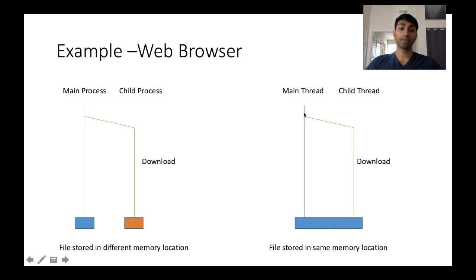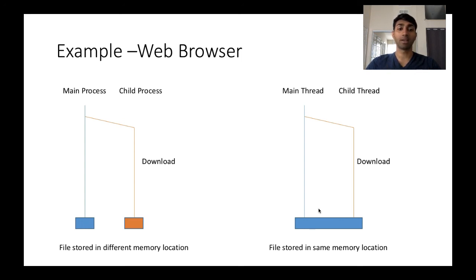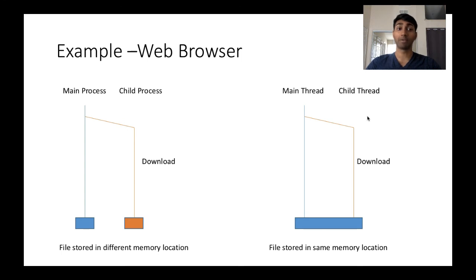When the download completes, the file resides in a separate memory location from the main process. The main process then has to create another communication channel with the child process to copy the data — which is a huge headache. All of this can be avoided with threads. A child thread handles the download, and since threads share the same memory space, the main thread can directly access the downloaded data. However, if both threads access the same memory location simultaneously, the system might crash.